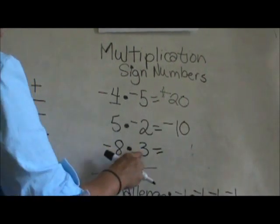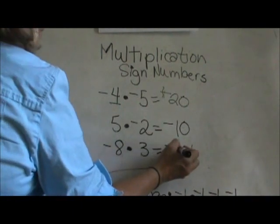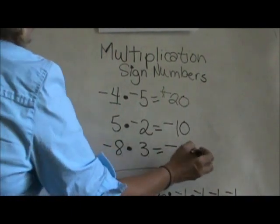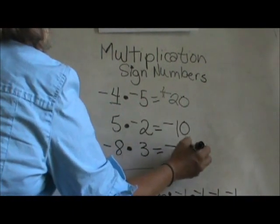And then you multiply 5 times 2. Negative times a positive — it doesn't have a pair, so the answer must be negative. 3 times 8 is 24.